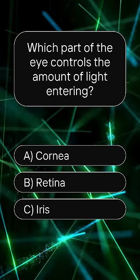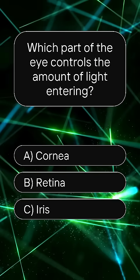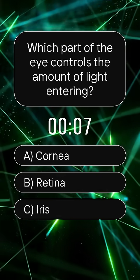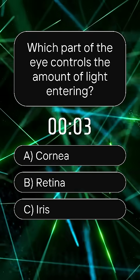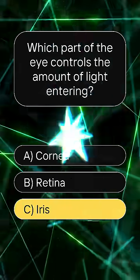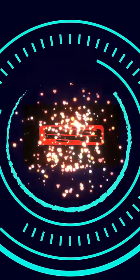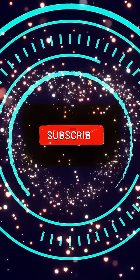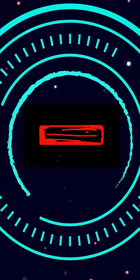Which part of the eye controls the amount of light entering? Answer: C, iris.